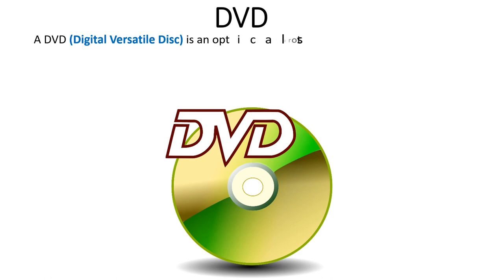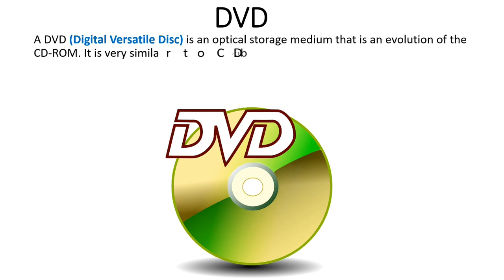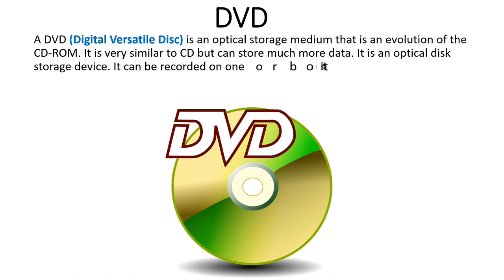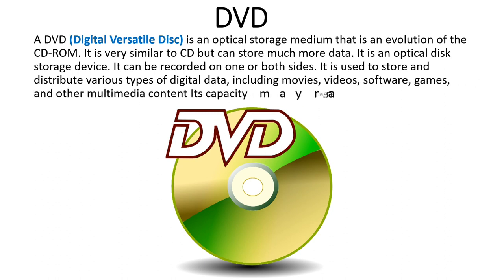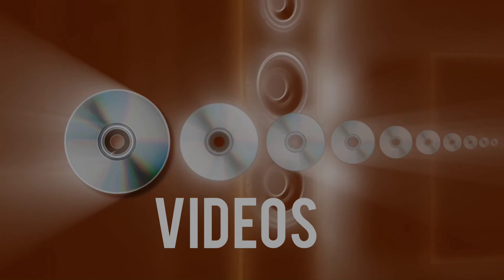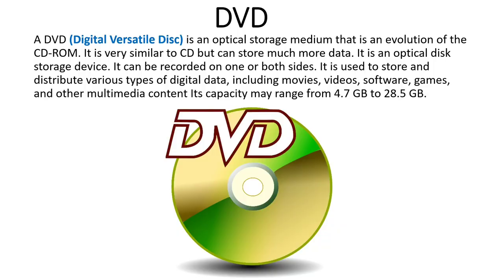The next type of secondary memory is DVD, which stands for Digital Versatile Disk or Digital Video Disk. It is also an optical storage medium and is an evolution of the CD-ROM, very similar to CD. However, it can store a larger amount of data compared to CD-ROM, as it stores data on both sides. The storage capacity of DVD is 4.7 GB to 28 GB, which is much higher than the capacity of a compact disk, making DVDs more popular.